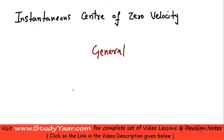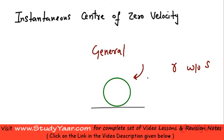Just recollect we had seen that when you have a cylinder which is rolling without slipping, or a sphere or a wheel which is rolling without slipping, then we realize that at the point of contact your velocity is zero.